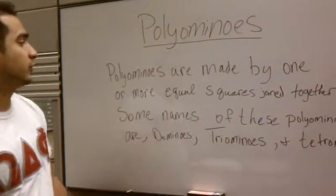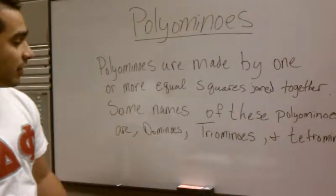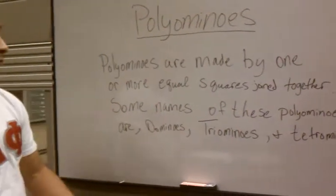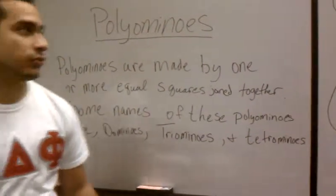Today I'm going to be talking about polyominoes. Polyominoes are made by one or more equal squares when they are joined together. Some of the names of these polyominoes are dominoes, triominoes, and tetrominoes.